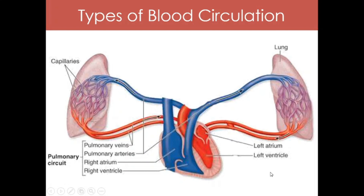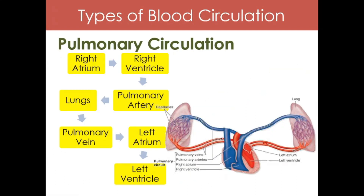This oxygenated blood will be received in the left atrium and then go to the left ventricle. The left ventricle, having the thickest wall of the heart, will pump the oxygenated blood towards the different parts of the body through the aorta. So to trace the pathway of pulmonary circulation: right atrium (deoxygenated) → right ventricle → pulmonary artery → lungs (becomes oxygenated) → pulmonary vein → left atrium → left ventricle → pumped to the different parts of our body.